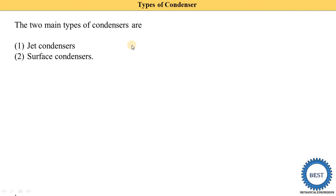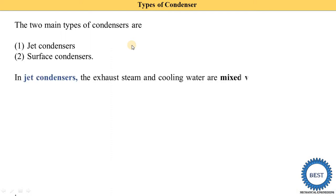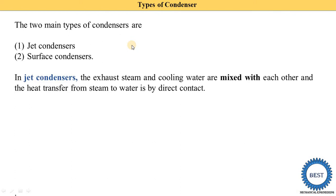In a jet condenser, the exhaust steam and the cooling water are mixed with each other, and heat transfer from steam to water is by direct contact. The steam coming from the turbines and the cooling water supplied in the condenser are both mixed. When the steam and the cooling water are mixed, the steam is converted into water — this is called condensation.